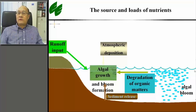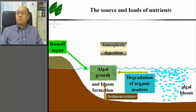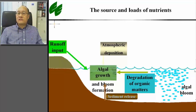Algae can absorb large amounts of dissolved nutrients during the bloom, even at low nutrient levels. If we can remove algae cells from water and sink them down to the sediment, and not let them be reused by the growth of algae anymore, then we may not only solve the problem of toxic algal bloom, but also make use of the valuable nutrients as a resource for the restoration of ecological systems such as submerged vegetation.